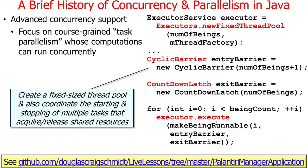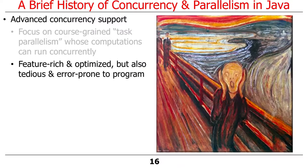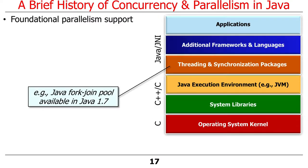These are some of the cool features you can get in Java 1.5. Java 1.5 concurrency mechanisms are very feature-rich and very optimized, but they are somewhat tedious and error-prone to program. So it's easy to get things wrong once again.